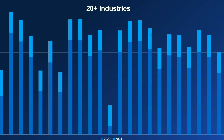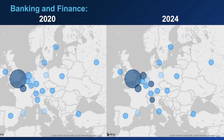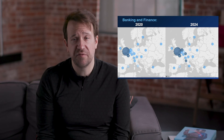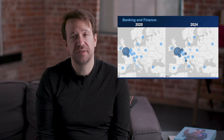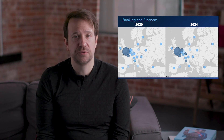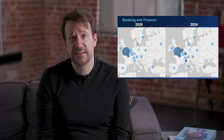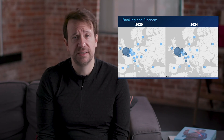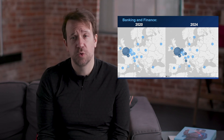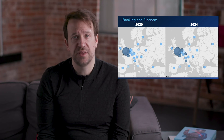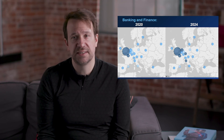You can see here a look at banking and finance in 2020 versus 2024 across a large number of metros in Europe. The darker colors represent greater data gravity intensity, and lighter colors represent lower intensity. On the right, you'll notice there are more dark circles because data gravity intensity has increased quite a bit in many of the different metros.